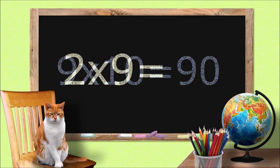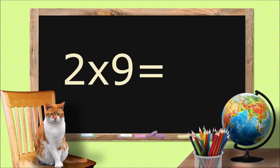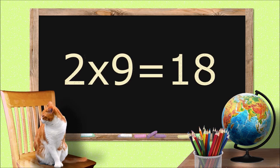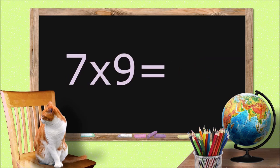2 times 9 equals 18. 7 times 9 equals 63.